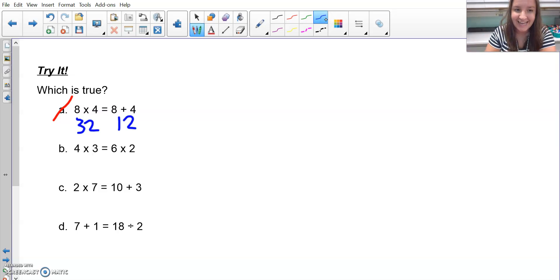B has four times three, and I know that four times three is 12. Then over here, I've got six times two. Six times two is also 12. So that is an equivalent equation.